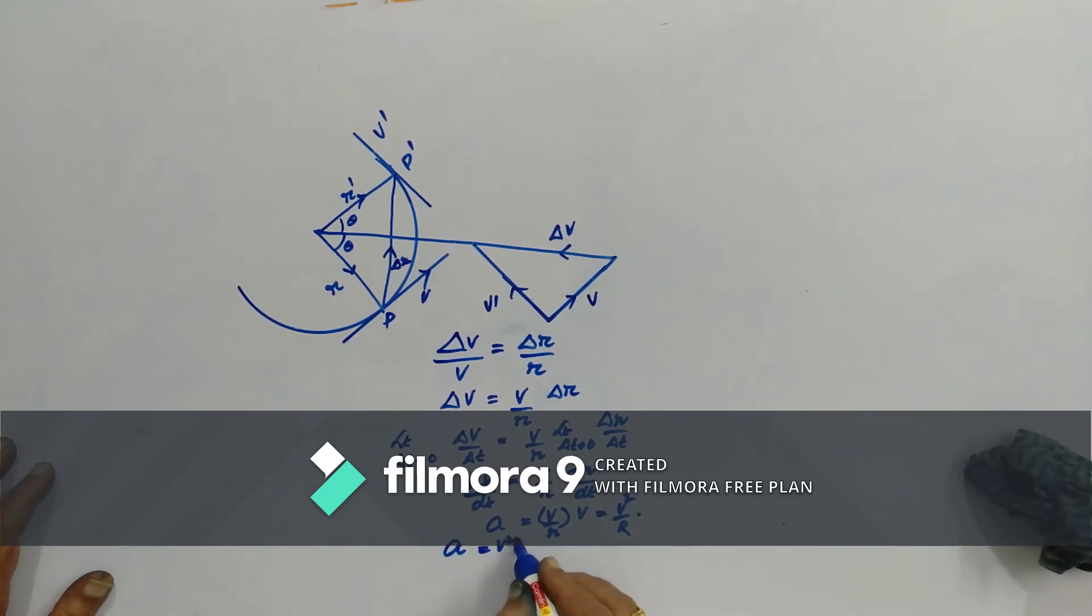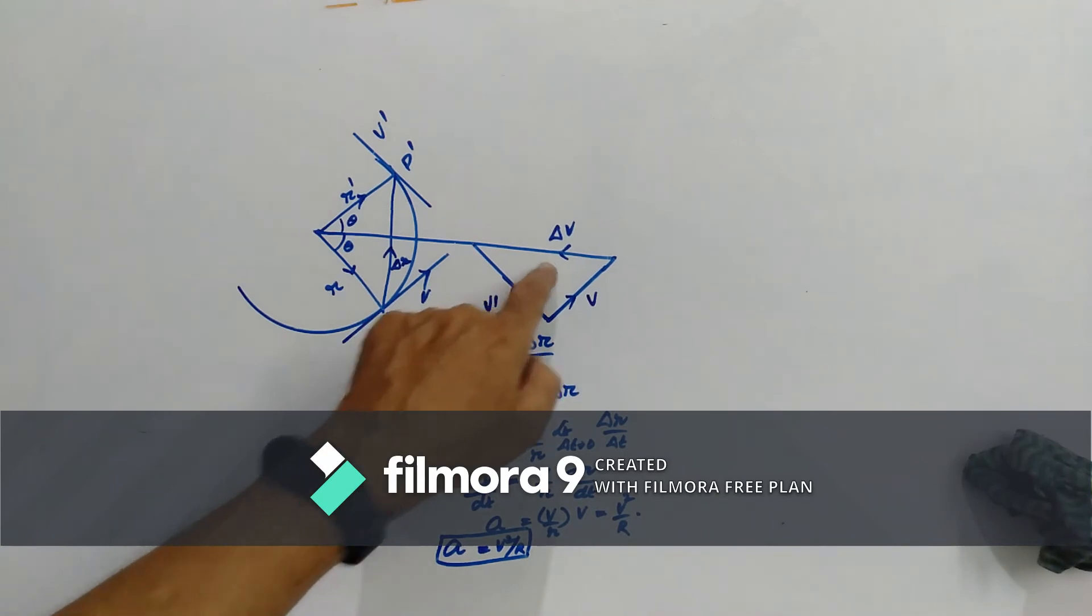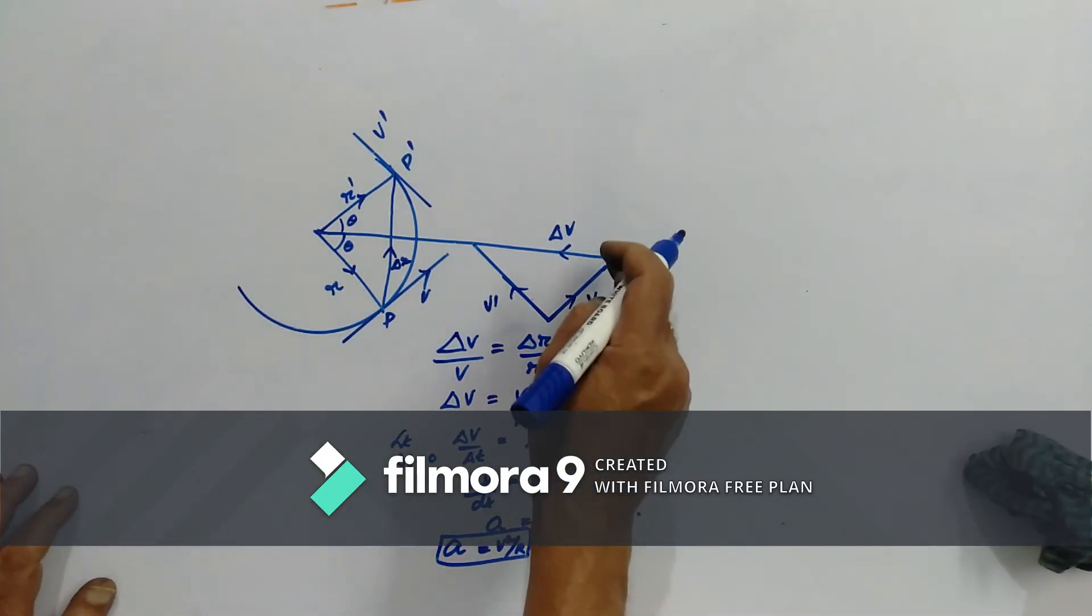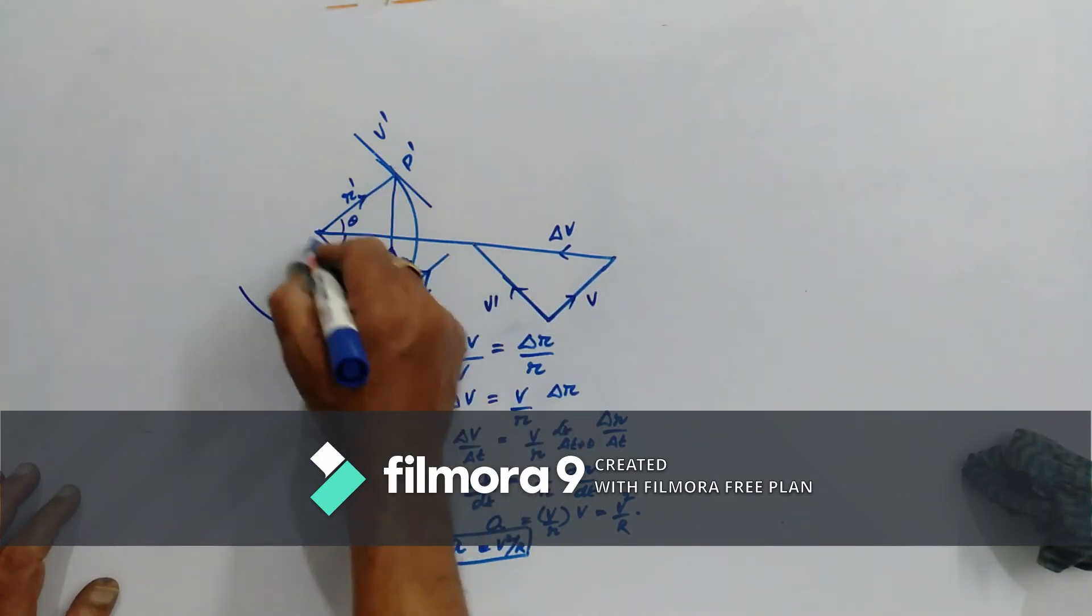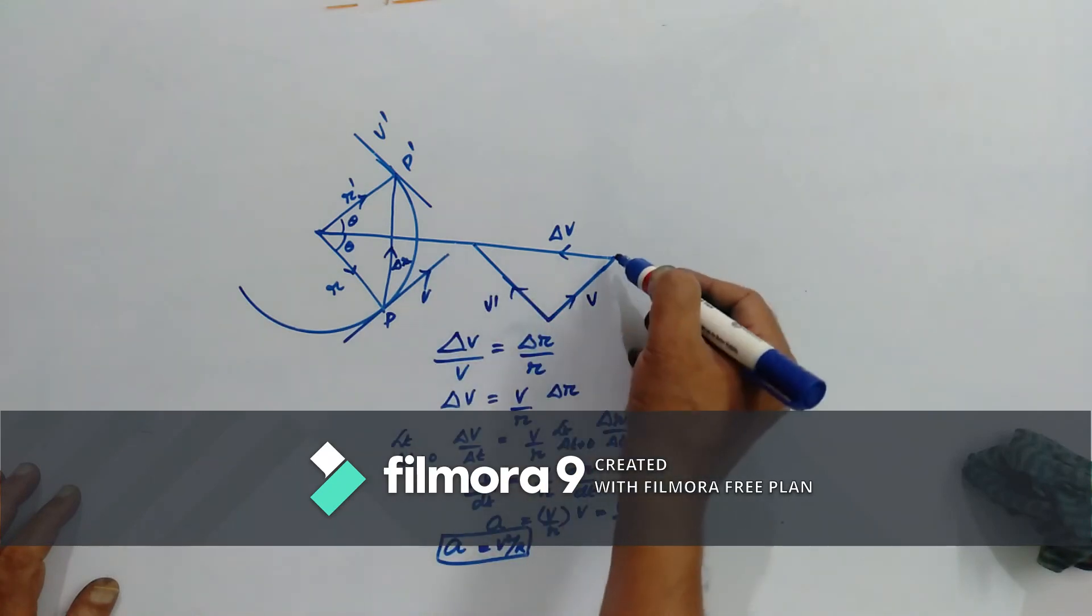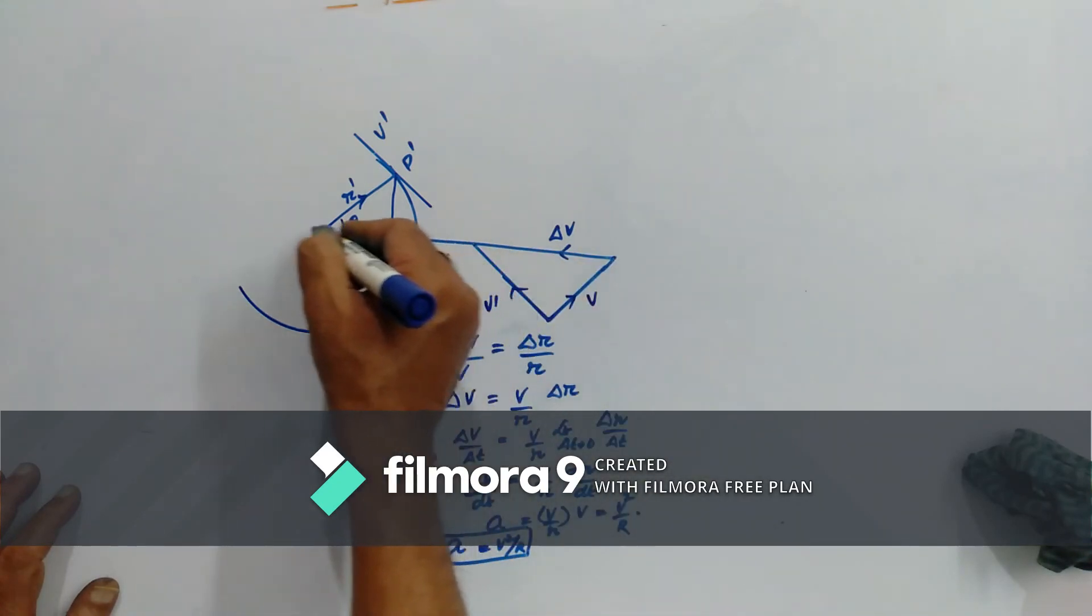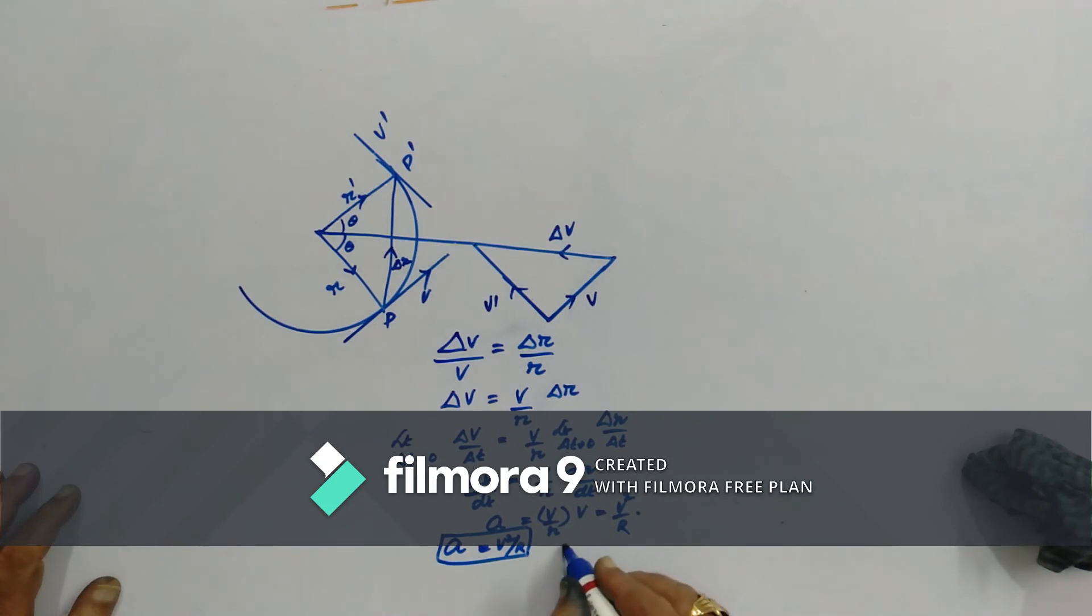So, A the magnitude is V square by R and we have already said that delta V is perpendicular to delta R. When we place delta V vector on the bisector of this triangle, if it is making 90 degrees it should pass through the center. Therefore, the direction is towards center or center seeking acceleration. This is only known as centripetal acceleration.